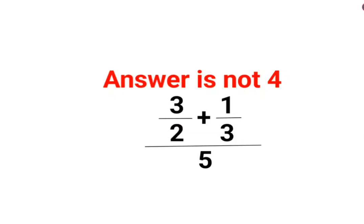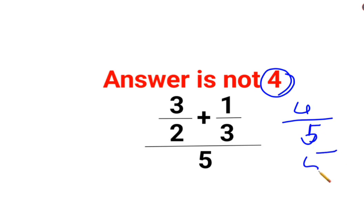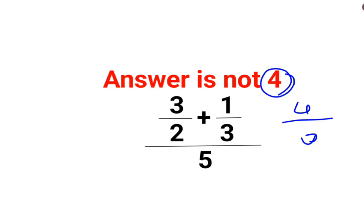Welcome everyone. A lot of people thought that the answer for this one is supposed to be 4, because 3 plus 1 is 4, divided by 2 plus 3 is 5, and then divided by 5 — so this and this gets cancelled, making the answer 4. That is absolutely wrong. That is not how we are supposed to do fractions.